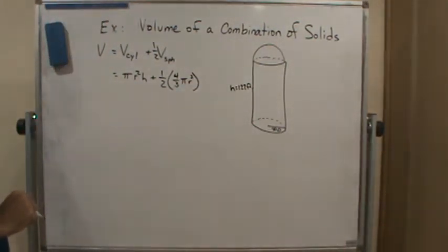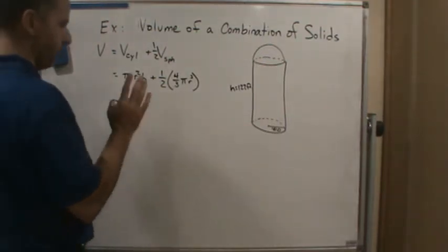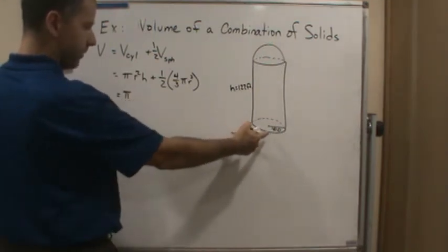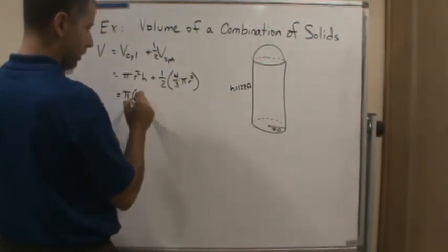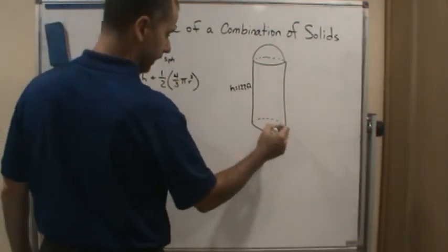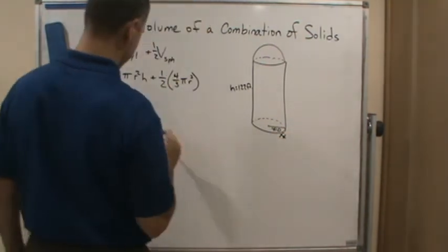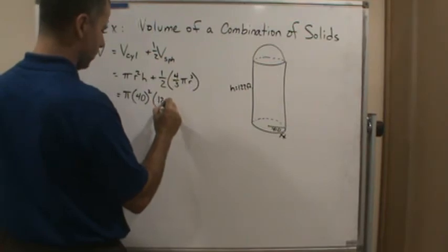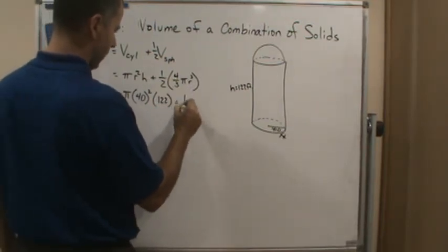Okay, and there's our formula. So now all we have to do is plug in what we know. Well, we know the radius is 40 feet. This is in feet.